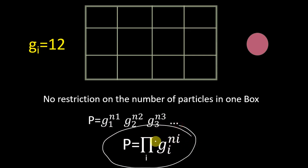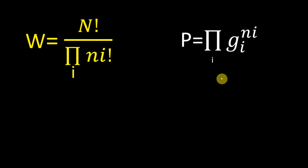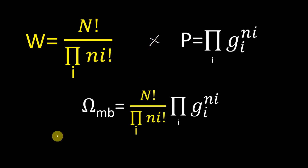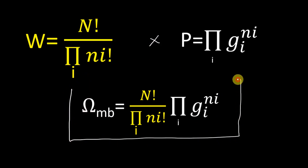This first piece — n factorial divided by the product of ni factorials — is the number of ways the particles can arrange themselves in the energy boxes. This second piece — the product of gi to the ni — is the number of ways in which those particles can arrange themselves in the degenerate energy levels. Multiplying these two gives our answer: the thermodynamic probability of Maxwell-Boltzmann statistics. By maximizing this, we will get the Maxwell-Boltzmann distribution function.